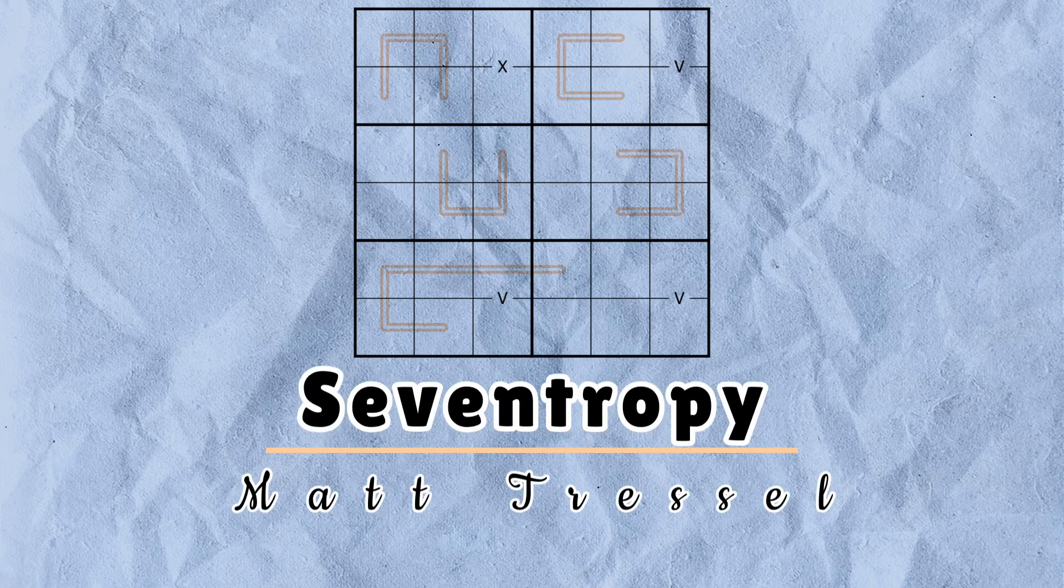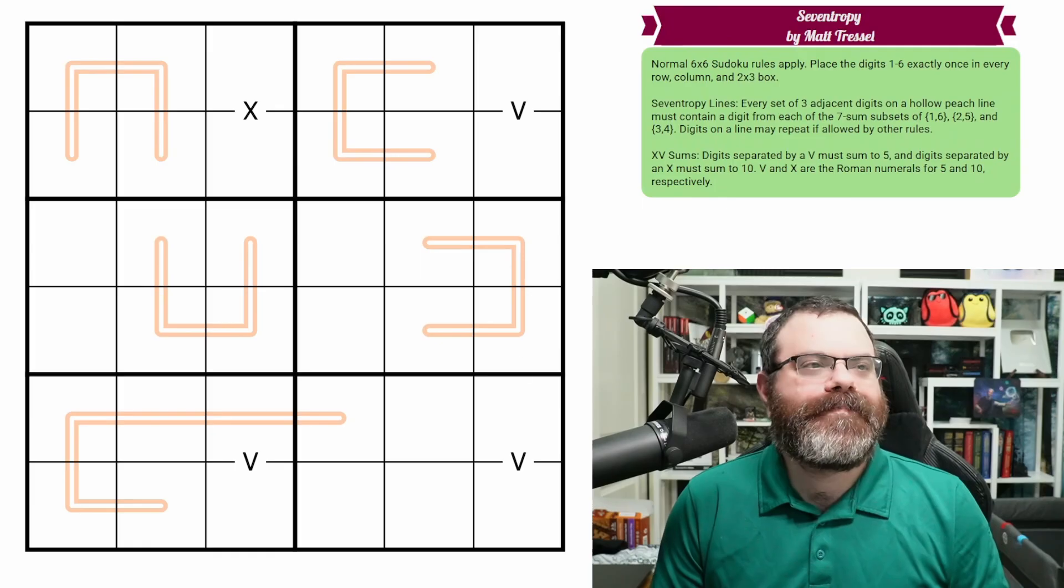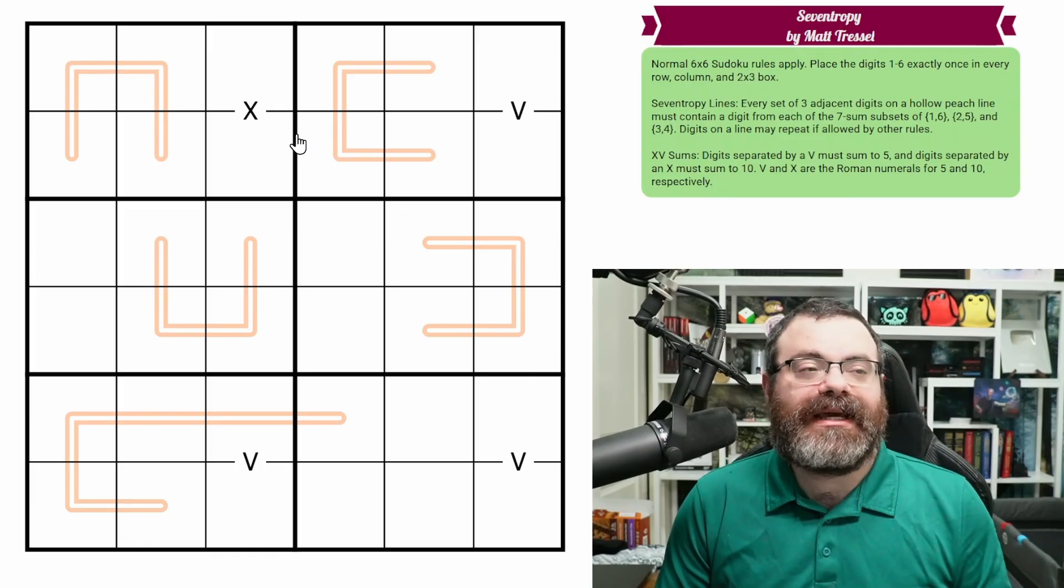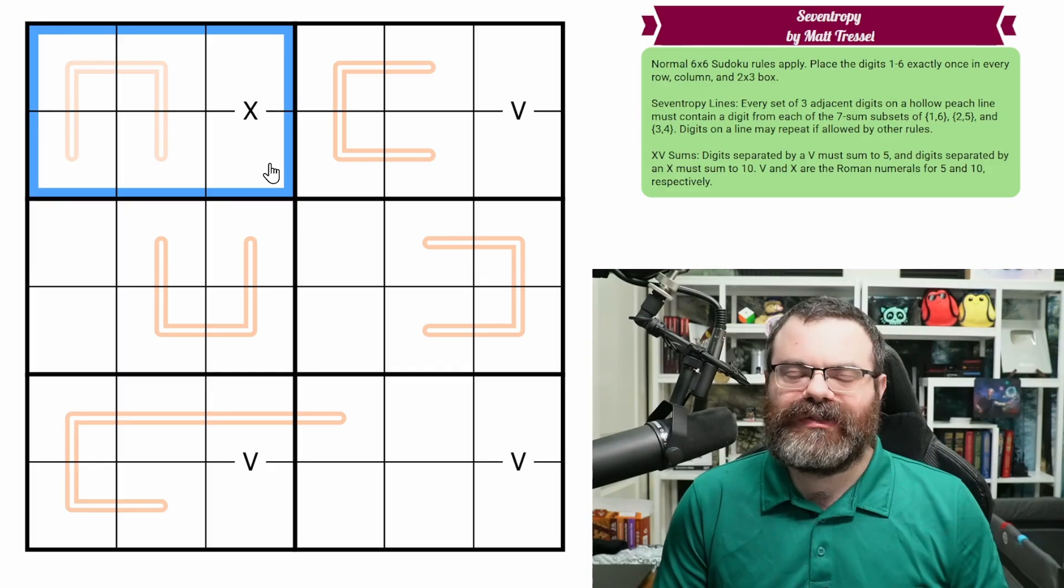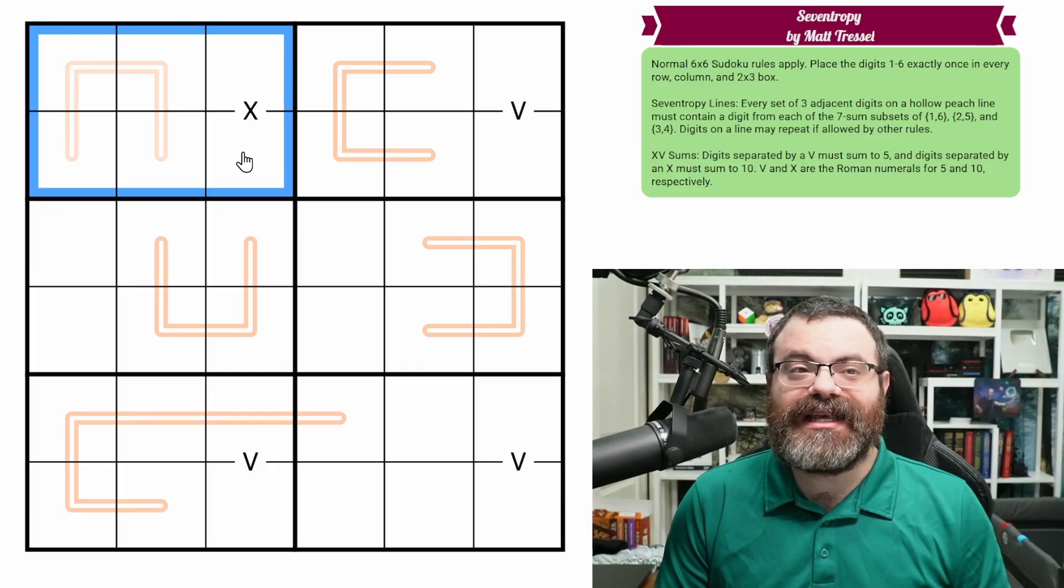Hello, let's continue our Sudoku adventure with 7Trippy by Matt Trestle. So we have normal 6x6 Sudoku rules, meaning in each row, each column, and each 2x3 box, we are placing the digits 1 to 6 exactly once each.